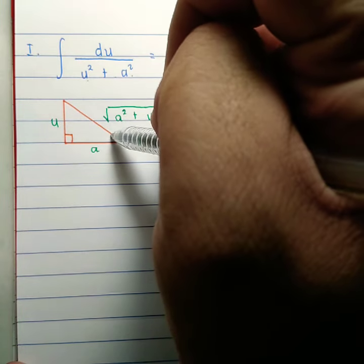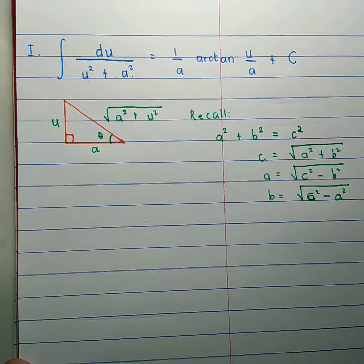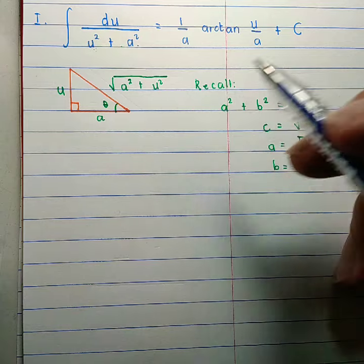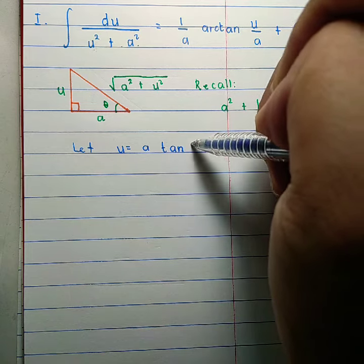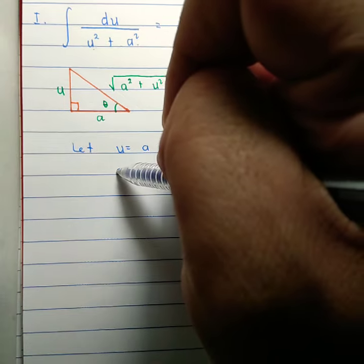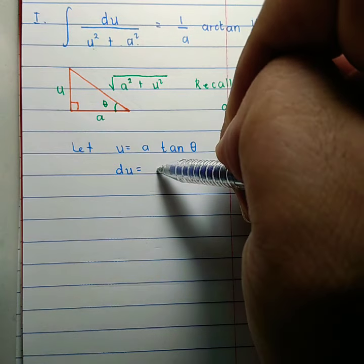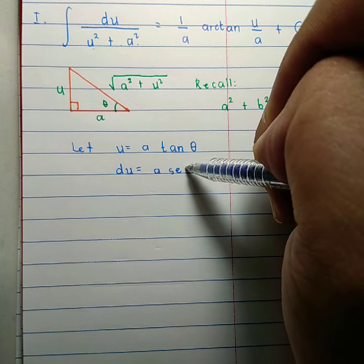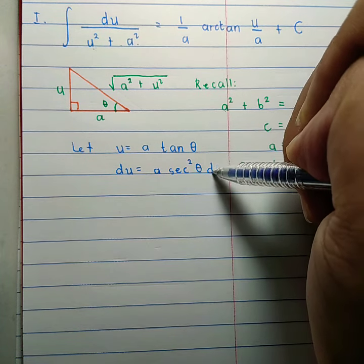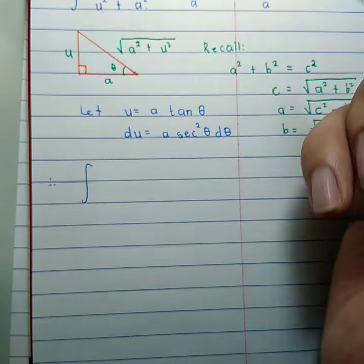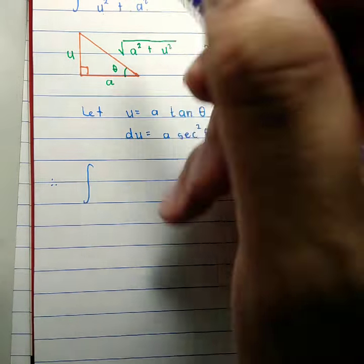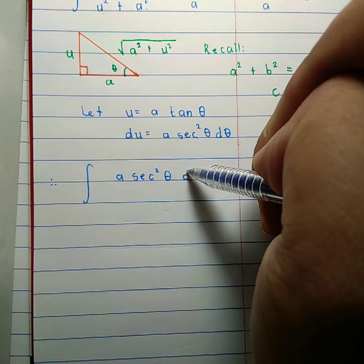Using trigonometric substitution, we label the angle theta. This is the second case of trigonometric substitution. We let u be equal to a tangent theta. Consequently, du is equal to a times the differential of tangent theta, which is secant squared theta dθ. We can now substitute into the original given, so we have a·secant squared theta·dθ on top.